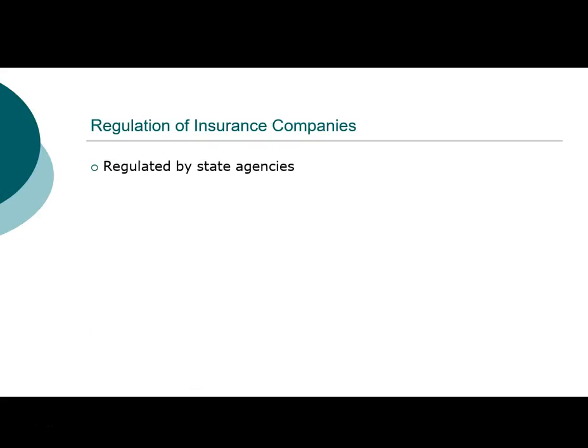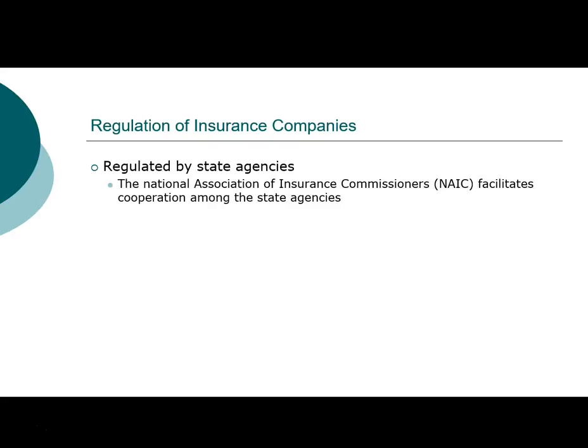One distinctive thing about insurance companies is that there are no national insurance companies. Each insurance company is a separate corporation in each state. For example, Liberty Mutual, State Farm, or Blue Cross Blue Shield — each company in a state is its own separately incorporated entity, regulated by that state's agencies. There's no national insurance agency, only state insurance agencies, which makes it very challenging because state rules differ from state to state. There is an association called the National Association of Insurance Commissioners that tries to facilitate more similar regulations for companies that operate across multiple states.